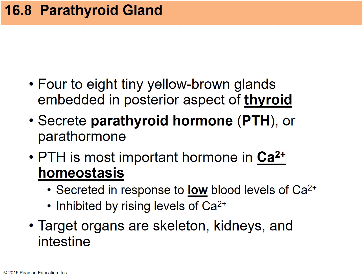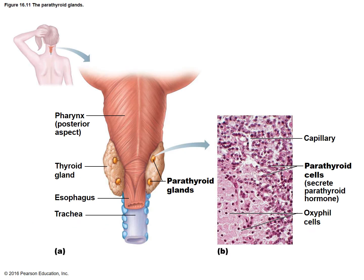When calcium levels get really high, PTH is inhibited. PTH has an effect on target cells in the skeleton, kidneys, and intestines. If calcium levels are low in the blood, we need to get them back up — that's how PTH works. The picture shows the parathyroid glands from a posterior view, on the backside of the thyroid gland.